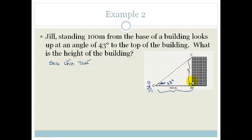And we want the height of the building, which is the opposite side to the angle. So that's that. So we're going to say tan of 43 degrees is equal to the height of the building, which is the opposite side, over 100. Therefore, we've got 100 tan of 43 degrees is equal to H.